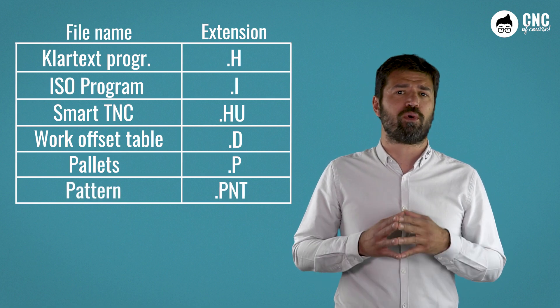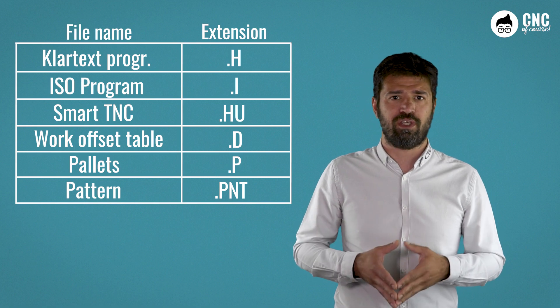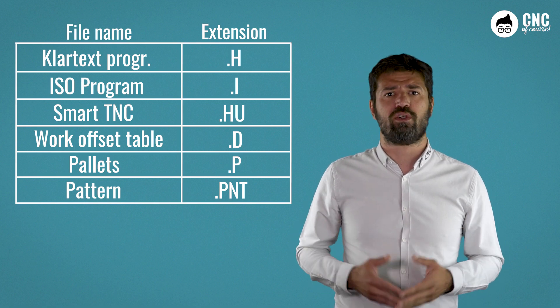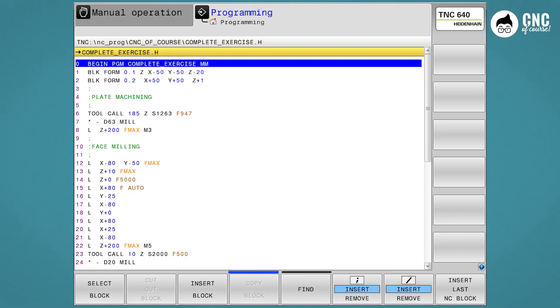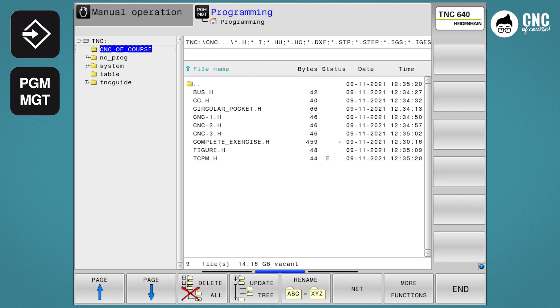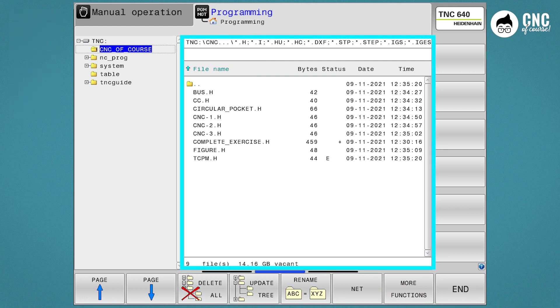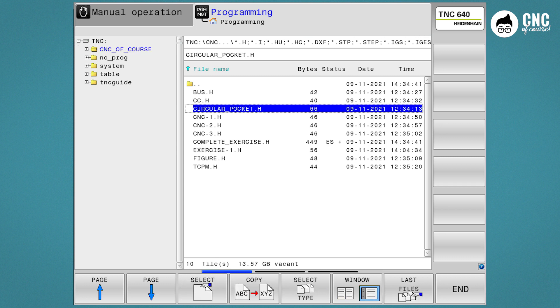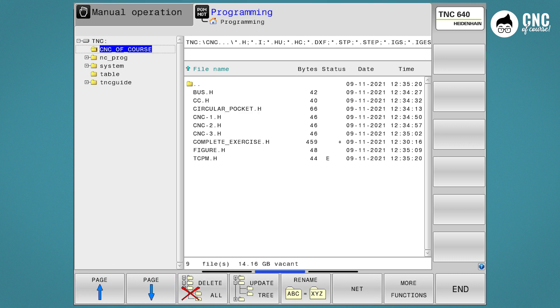In this course, we will focus on H programs with the Klartext programming. Then in the next lesson, we will see how to create and manage tables. Pressing the editing key followed by program management splits the screen into two parts. The directories are on the left side and the files are on the right side. Simply move to one side or the other using the arrow keys on the keyboard and the soft keys at the bottom of the screen.